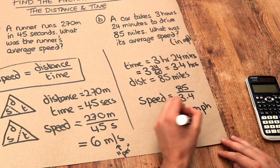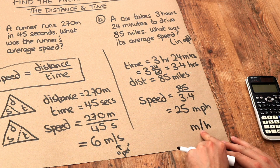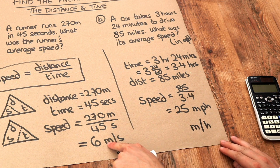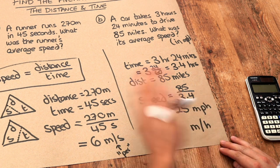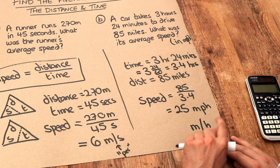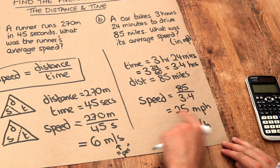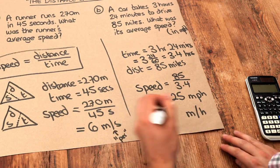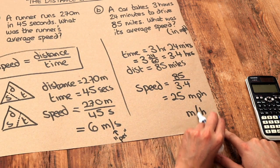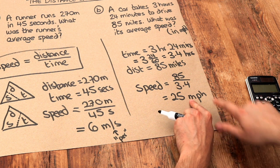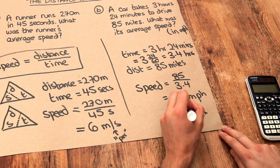Notice that we don't write miles per hour with a slash the same way we write meters per second. I think it's something to do with the fact that miles is an imperial measure rather than metric, but by convention we write MPH for miles per hour rather than using the slash notation.